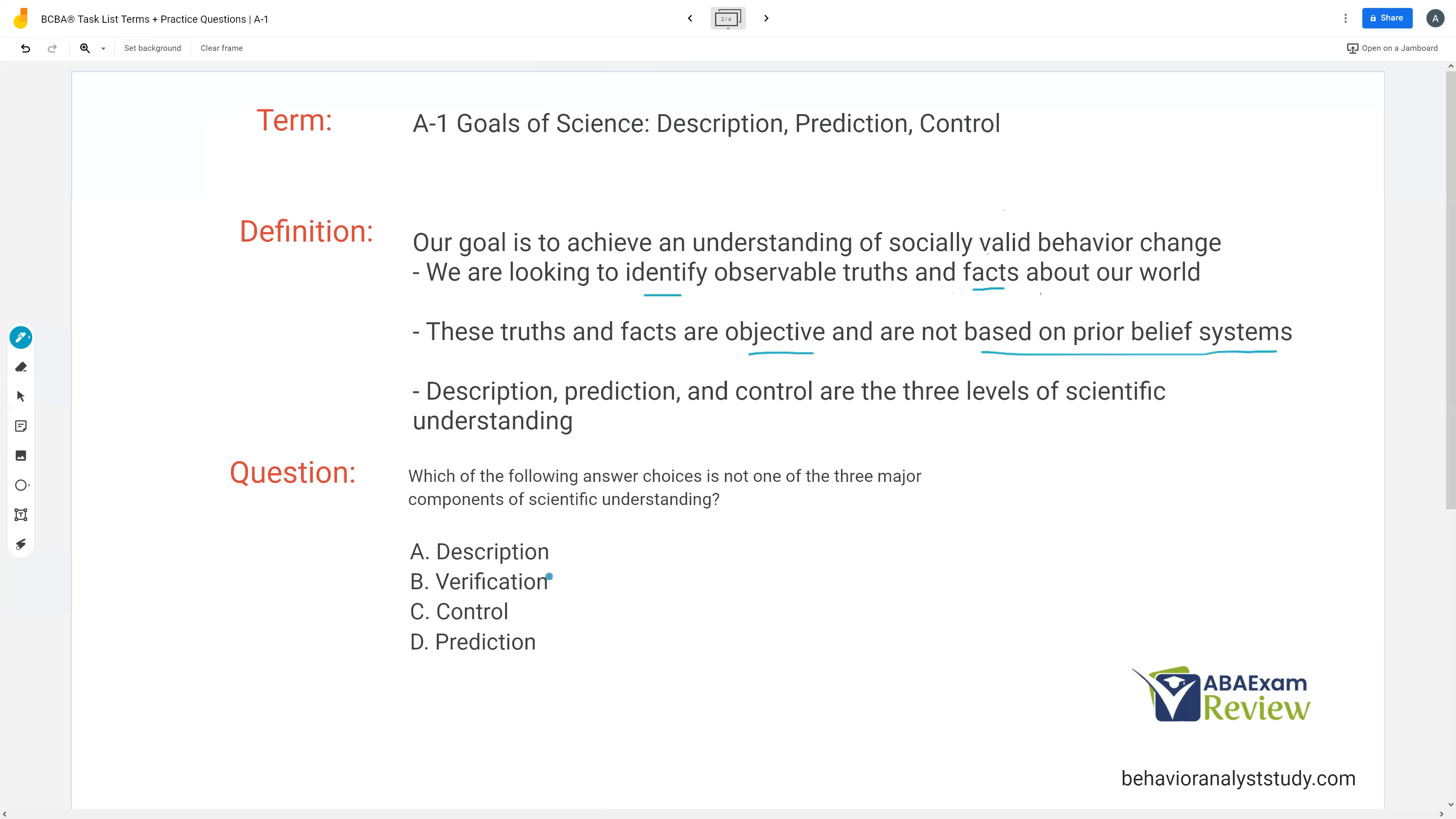B, verification. Where does verification come from? Verification comes from baseline logic. You've got to be careful because there's a lot of situations like this. If we're talking about reliable data, we want data to be accurate, valid, and reliable. Baseline logic is prediction, verification, replication. So it's very easy to get these things kind of mixed up. So with goals of science, we need description, prediction, and control. And if you can get those down, you're going to be off to a good start.